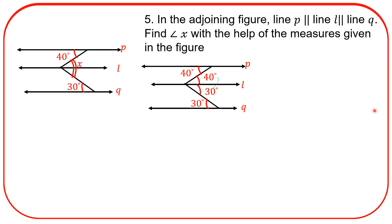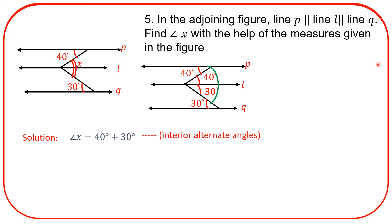Now, what is x? This complete angle is x, meaning 40 plus 30 is equal to x. That is 70 degrees. Solution: angle x is equal to 40 degrees plus 30 degrees. Reason: interior alternate angles. Angle x is equal to 70 degrees.